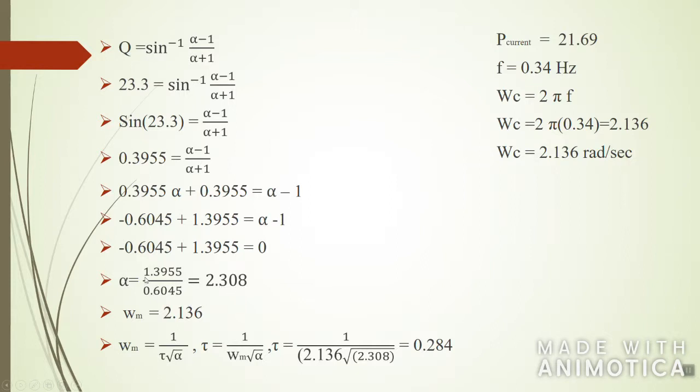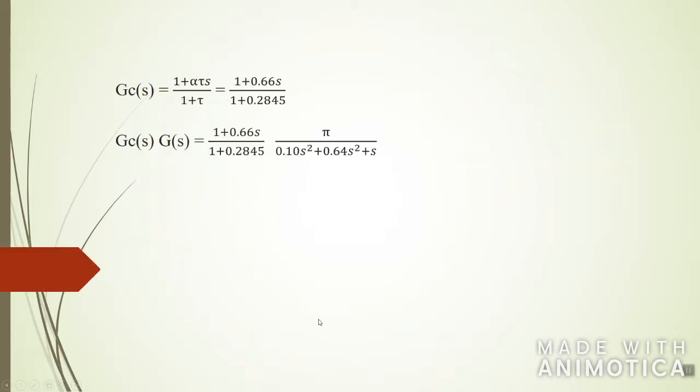Substituting these values and solving the equation, we obtain that alpha is equal to 2.308. We already obtained alpha. ωm is also ωc, so it's the same. We have ωc and we know that ωc equals 1 over (τ√α). From solving or rearranging this equation, we get that τ equals 1 over (ωm√α), so we obtain that τ is equal to 0.284. We have the two components required to draw the compensator. Gc(s) is the equation of the compensator: (1 + ατs) over (1 + τs). This is the equation for a lead system. Substituting the values we obtained before: (1 + 0.656s) over (1 + 0.284s).